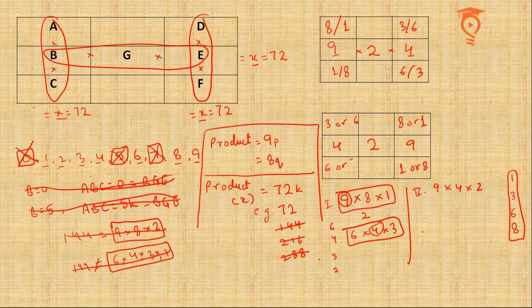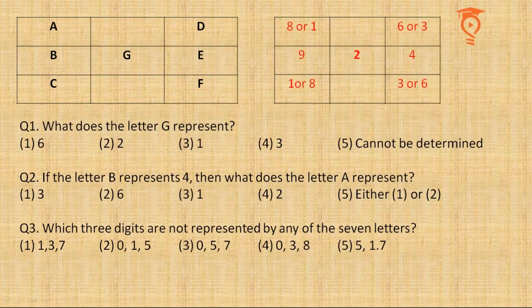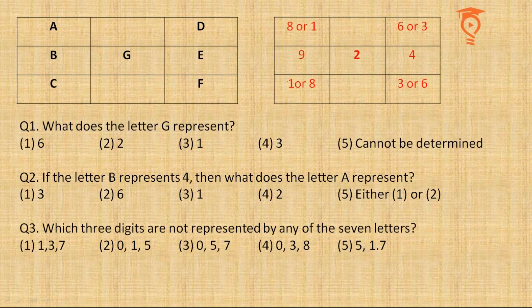So I think we have decoded maximum to the maximum possible extent. Let us look at the questions now. What does letter G represent? I think it was the question because this is the first thing we got to know. G represents 2, second option.